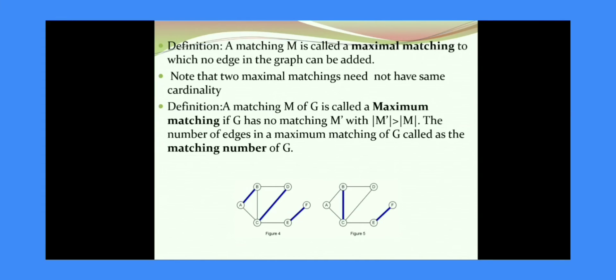Next definition is maximum matching. When is a matching said to be maximum? It is based on the number of edges. That is, if we do not find any matching M' such that the cardinality of M' is greater than cardinality of M. Which means the matching which we have found has the maximum number of edges, then it is said to be maximum matching. And the number of edges in the maximum matching is called the matching number of G.